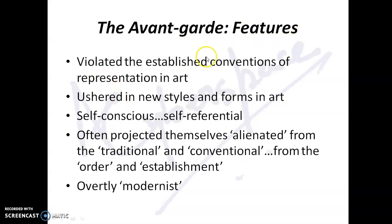So what were the features of the avant-garde? Primarily, they violated the established conventions of representation in art, and in so doing, they ushered in new styles and forms in art. They wanted to represent reality in a different way. In fact, many of them thought it's not required to represent reality at all, because art should represent art itself. The extreme avant-garde thinking considered that reality represents art, because art is so superior to life, so superior to reality. In this way, they challenged the very notion of representation.